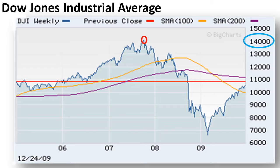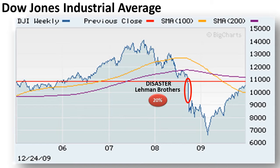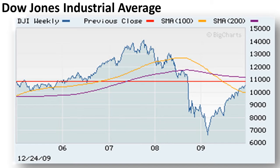However, a steep decline set in following the subprime mortgage crisis and prices continued to fall into 2008, a few optimistic rallies notwithstanding. In October of that year, however, disaster struck with the collapse of Lehman Brothers, and the Dow Jones Industrial Average lost over 20% of its value in a single day. The uncertainty of the next few months saw further steep declines, and finally in March 2009, the market bottomed out at 6,800 points, down over 50% from the peak of 16 months before.